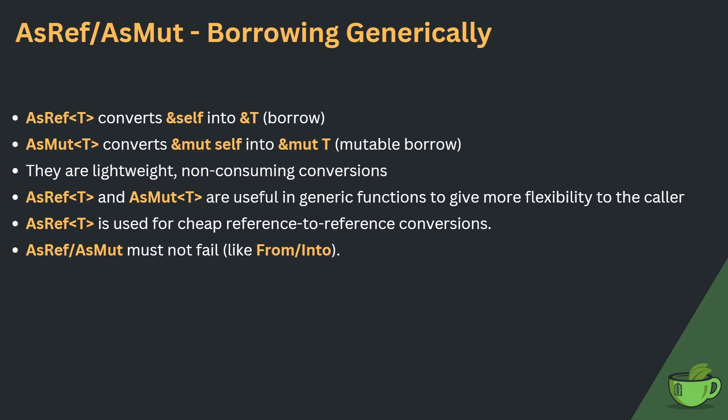AsRef converts from an immutable reference to Self into an immutable reference to a T — a normal borrow. AsMut converts from a mutable reference to Self into a mutable reference to T — a mutable borrow. The syntax is very similar between them. These are lightweight, non-consuming conversions. Both AsRef and AsMut are very useful in generic functions to give more flexibility to the caller, just as we saw with Into and TryInto. Note that AsRef and AsMut are used for cheap reference-to-reference conversions — if you have anything computationally intensive, use something else. They also must not fail, so they're infallible like From and Into.